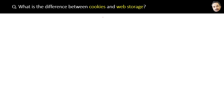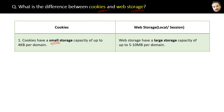What is the difference between cookies and web storage? The first difference is cookies have a small storage capacity of just up to 4 KB per website or domain, and that is the limitation of the cookie. Whereas web storage has a large storage capacity of up to 5 to 10 MB per website, which is huge in comparison to the cookie.